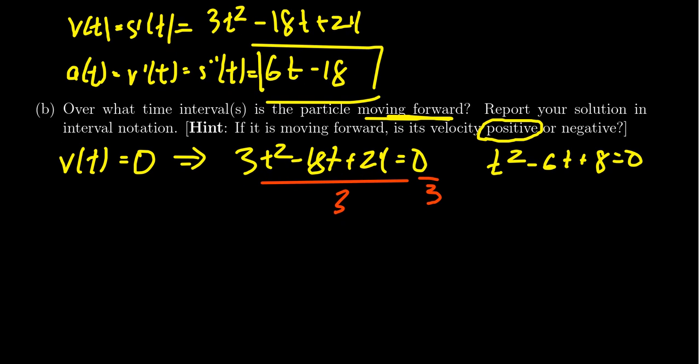I think factoring is going to work out just fine here. We need factors of 8 that add up to be negative 6. Since it's positive 8, that means they have to both be negative. We could take 2 and 4. That is to say, T minus 2 and T minus 4 as our factors. This tells us that T equals 2 and T equals 4.